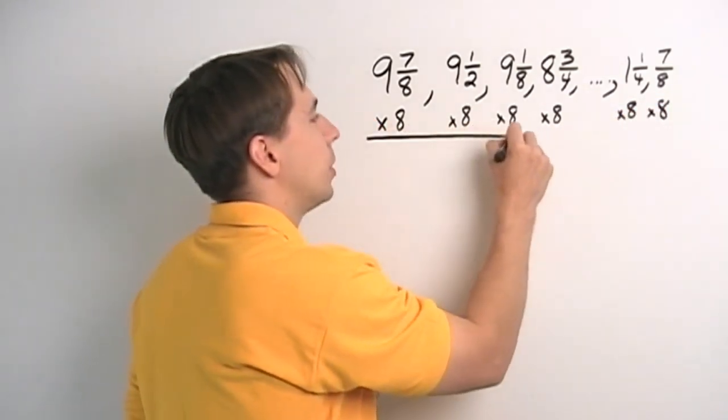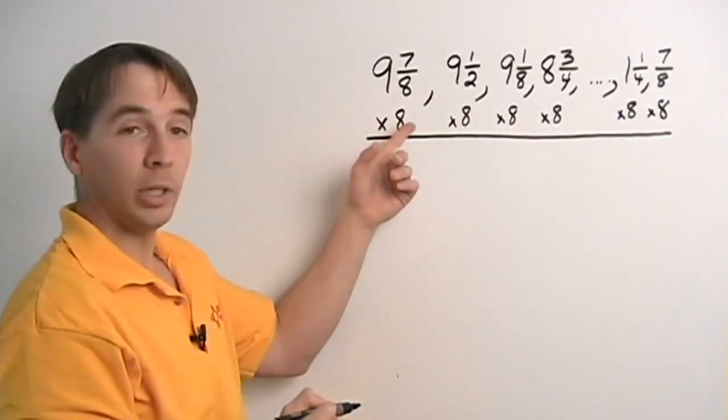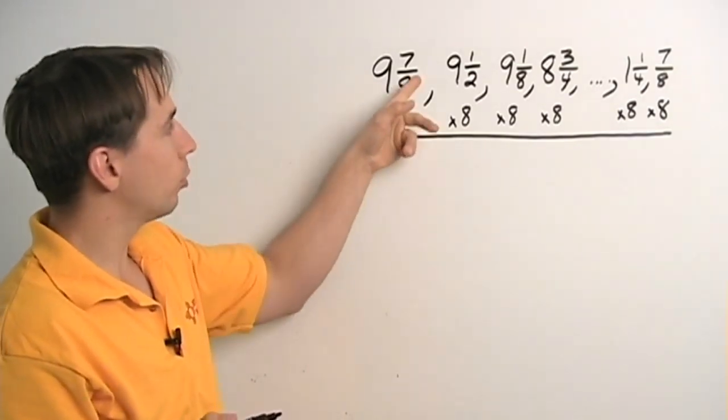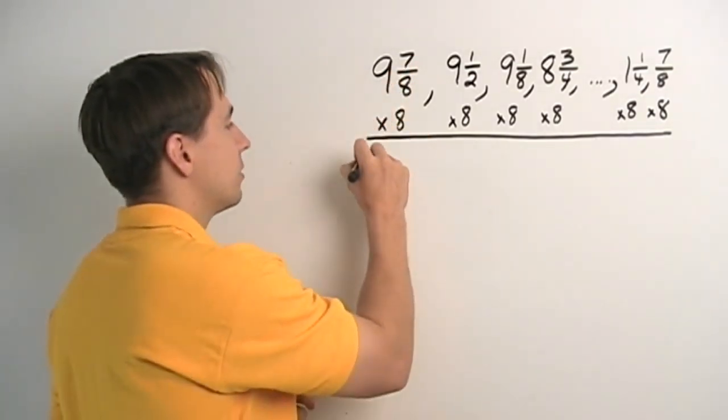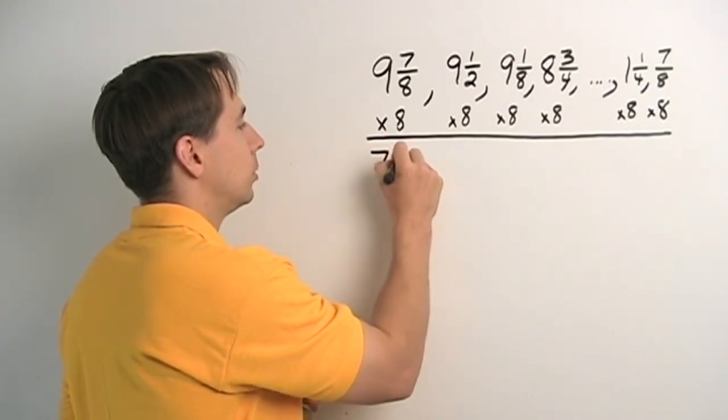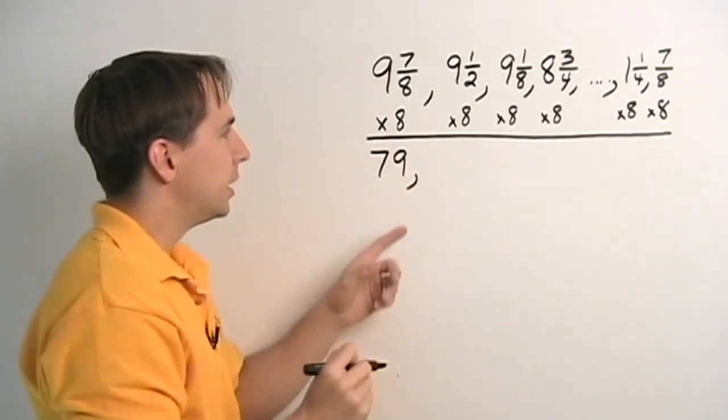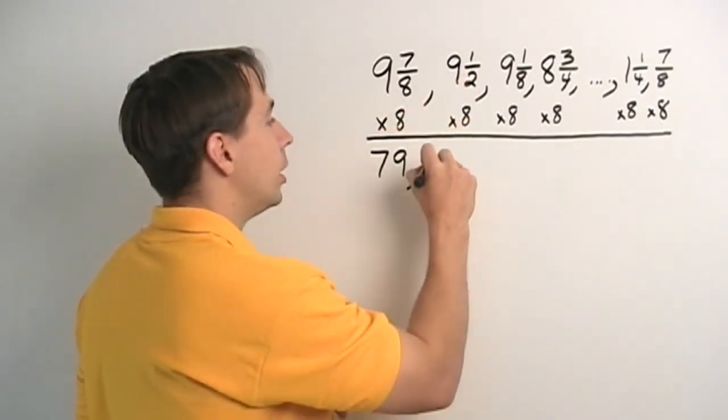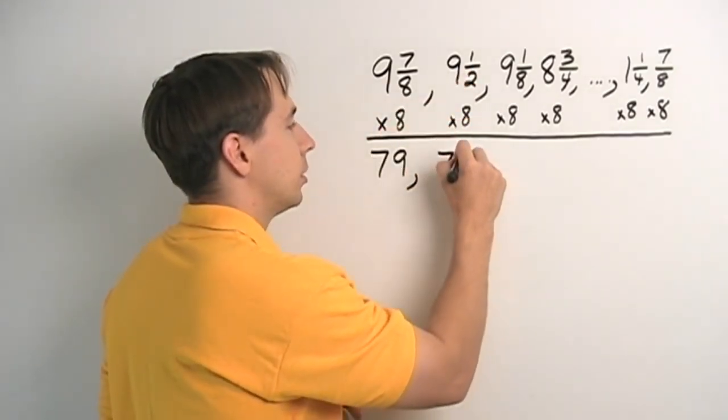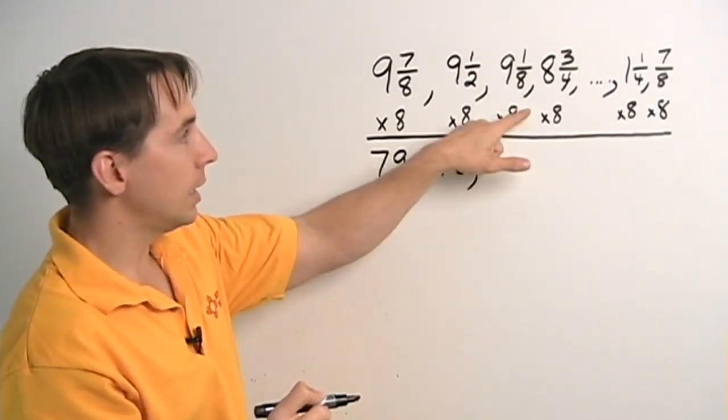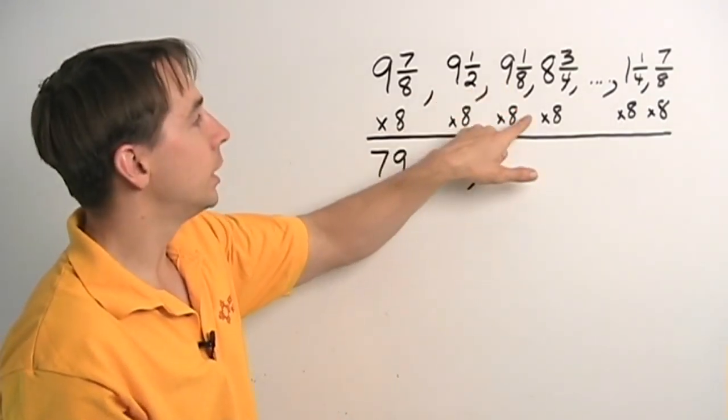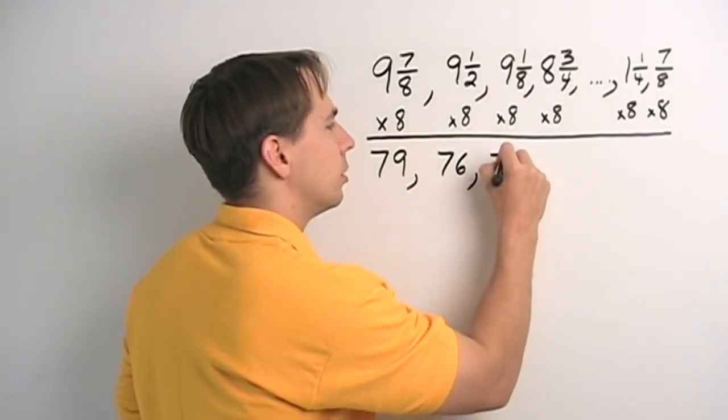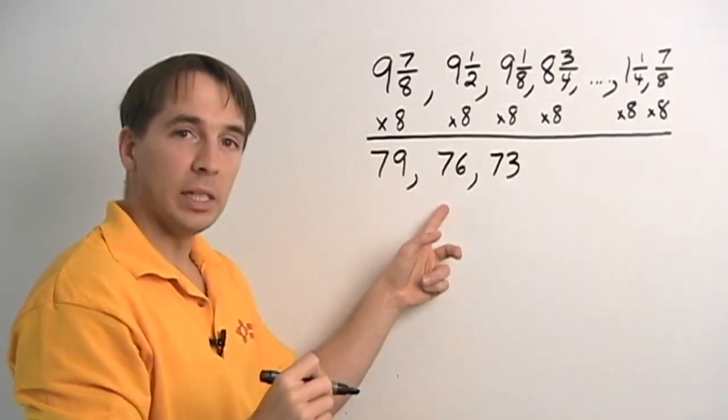So we multiply all these numbers by 8. And our first one here, 9 times 8 is 72, and we get 7 more when we multiply 8 by 7/8. So that gives us 79. And then the next one, 8 times 9, that's 72, 8 times a half, that's 4 more, that gives us 76. And the next one, 8 times 9, 72, 8 times 1/8, gives us 1 more, that's 73.